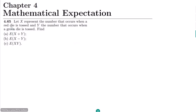Welcome back guys. I hope all of you will be fine. So this is question 4.65. The statement of our question is: let X represent the number that occurs when a red die is tossed, and Y the number that occurs when a green die is tossed. Find part a: expected value of X plus Y, part b: expected value of X minus Y, and part c: expected value of XY.